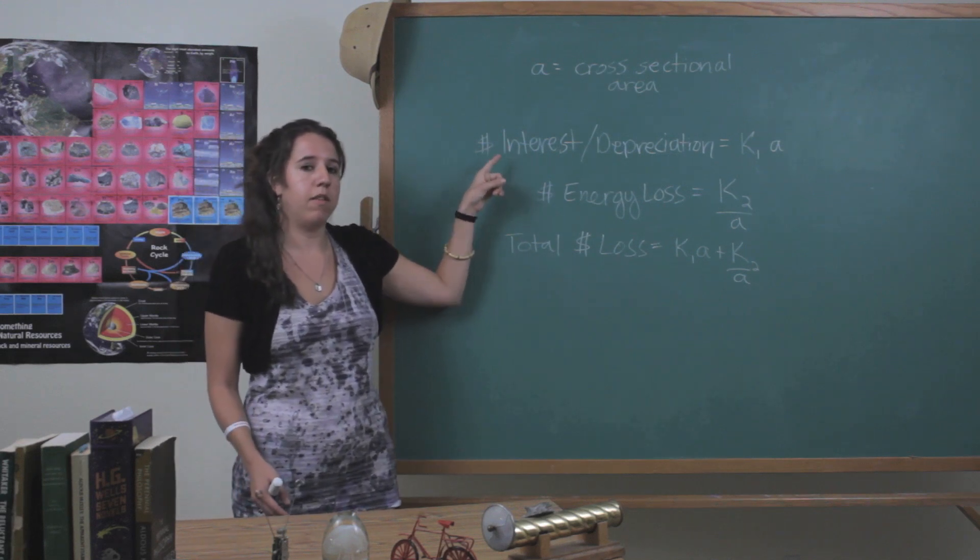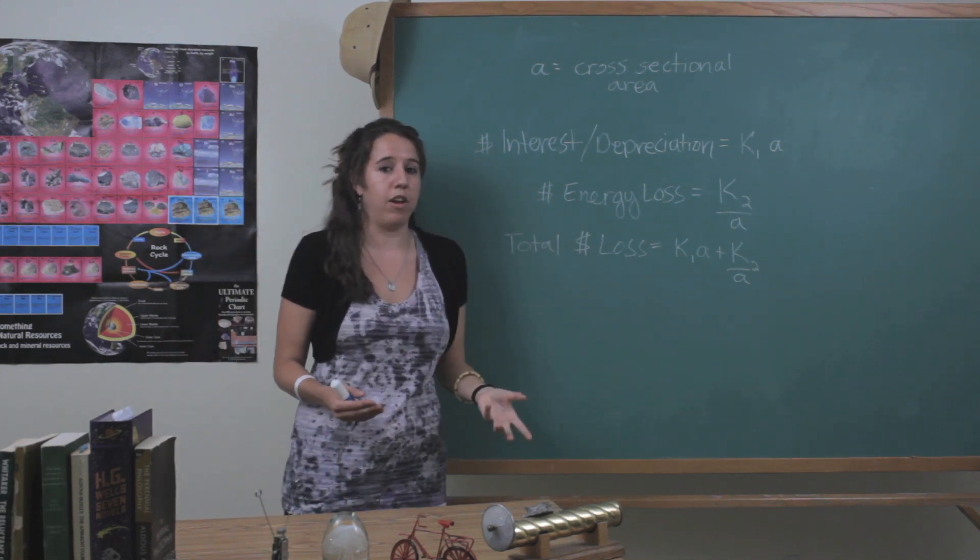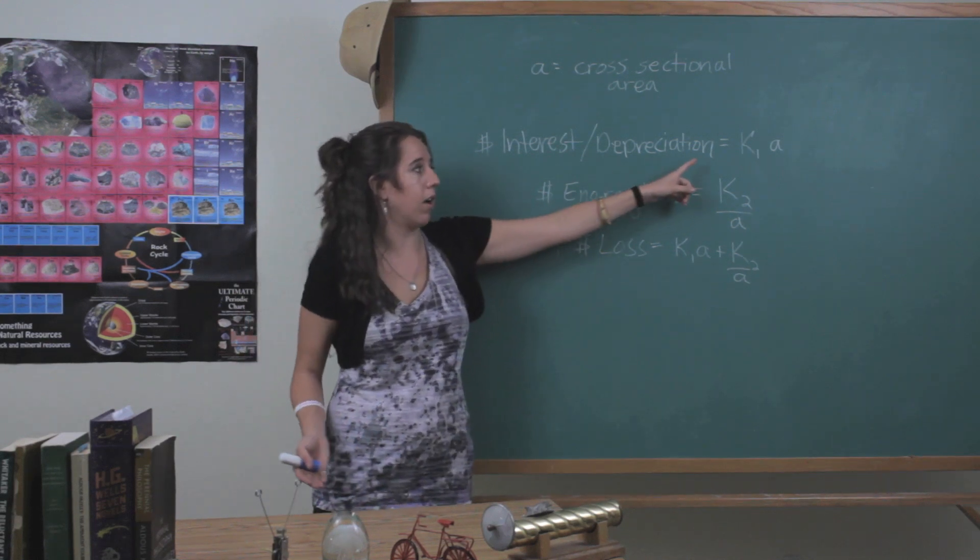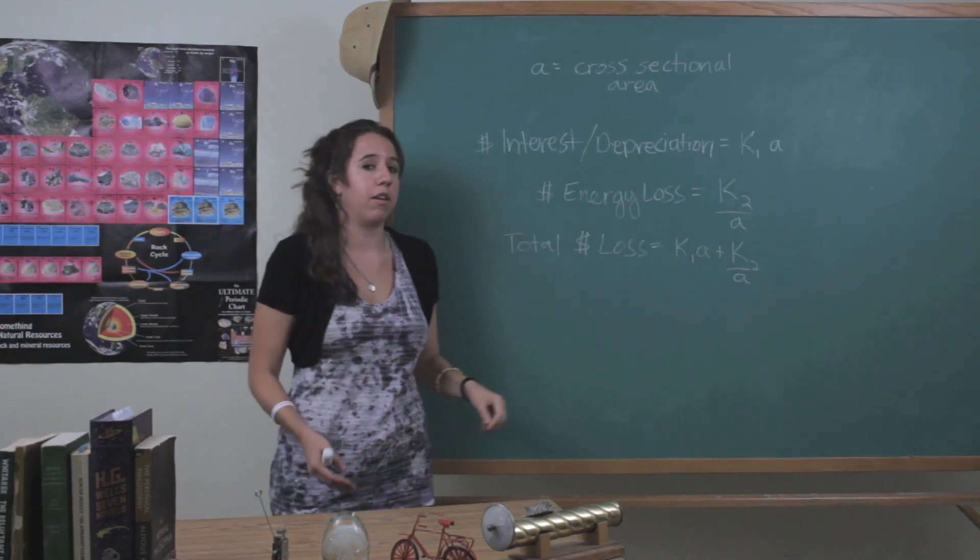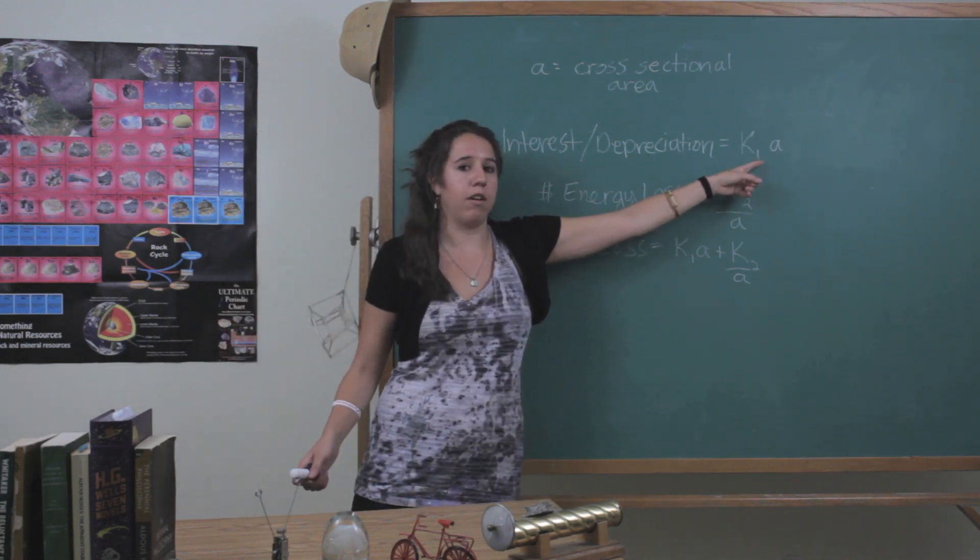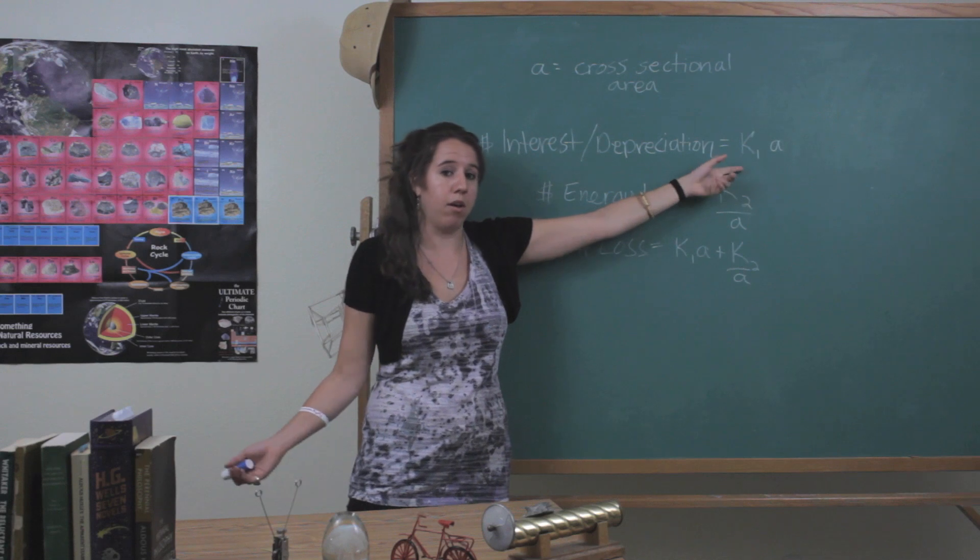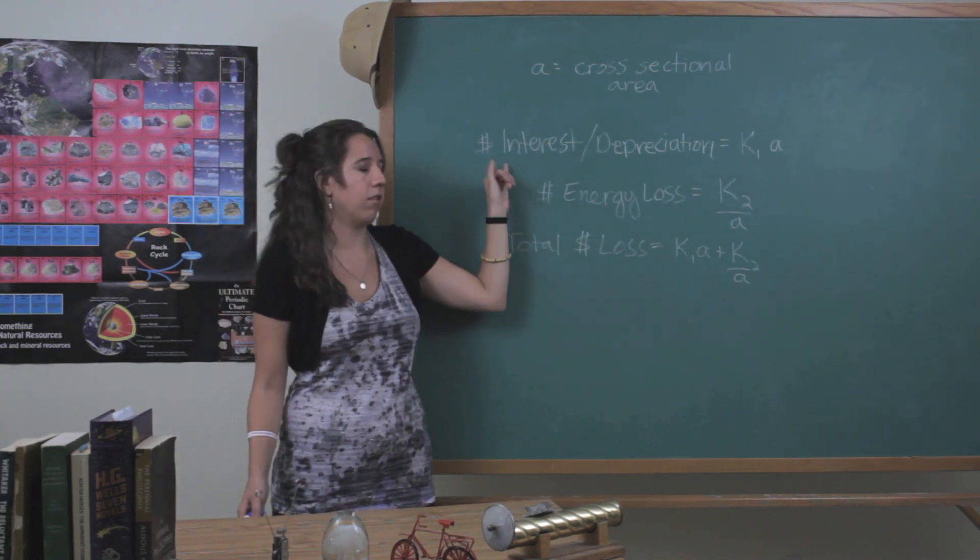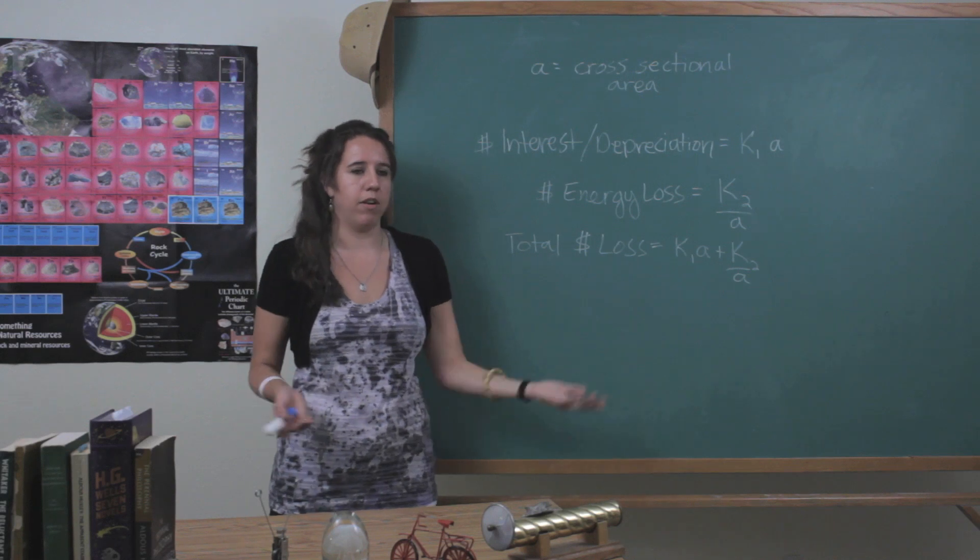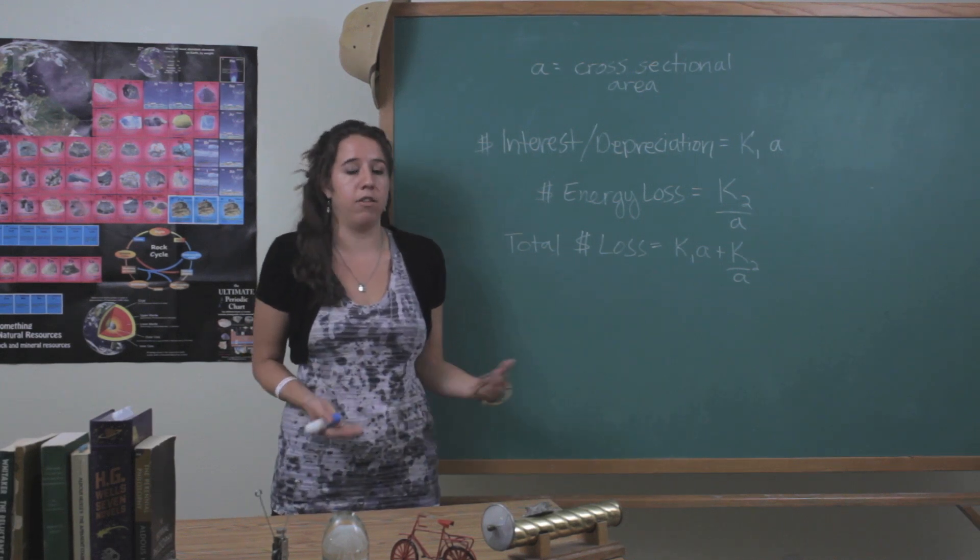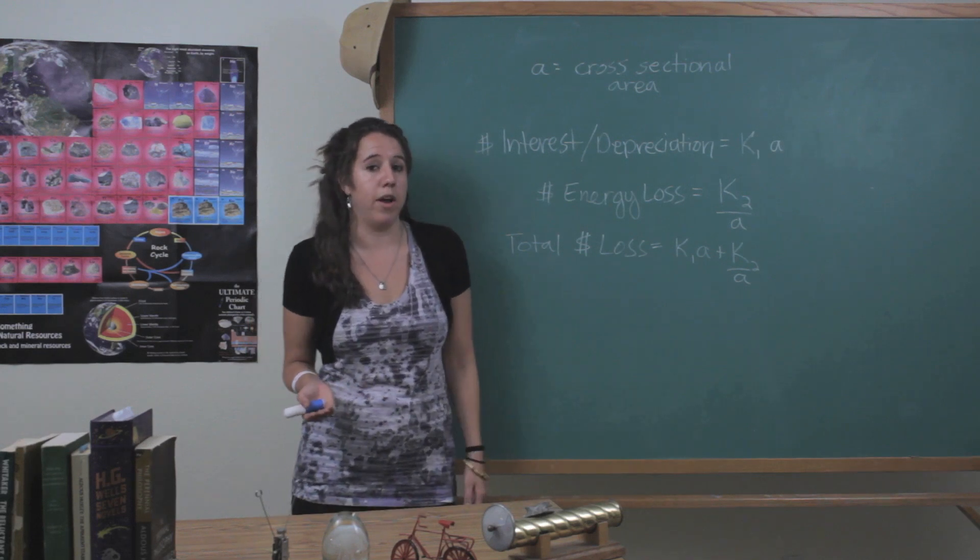So this first one, the cost of interest and depreciation on the line that you've chosen to use is going to be directly proportional to the cross-sectional area of the wire. And what that means is you take the cross-sectional area, multiply it by some constant, we call it K1 here, and then that's going to be how much money you're losing yearly or whatever time you like in interest, depreciation, and the cost, the initial cost of the investment in the wire.